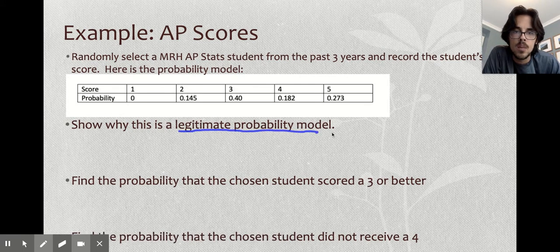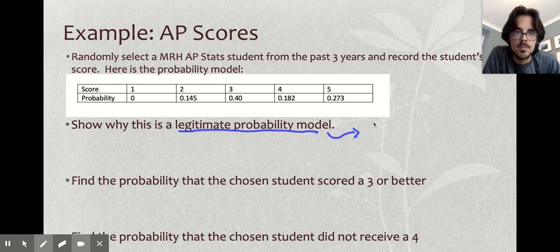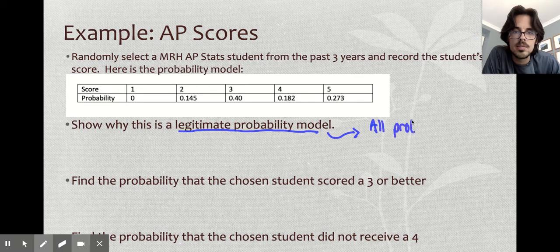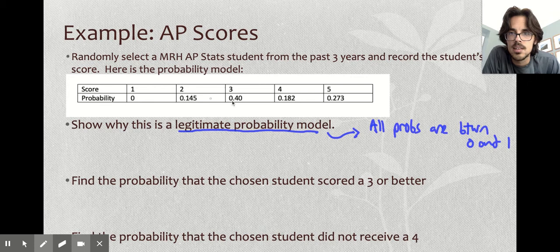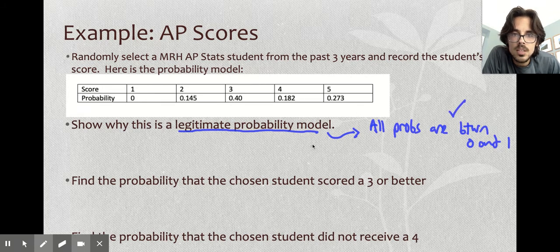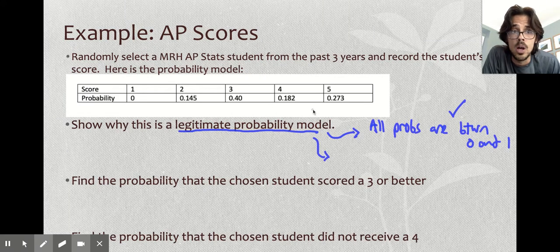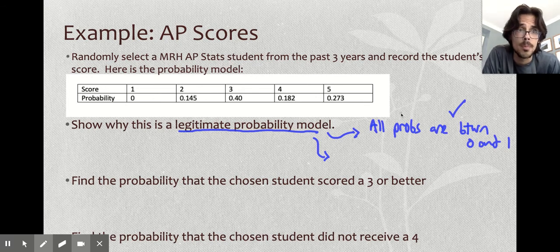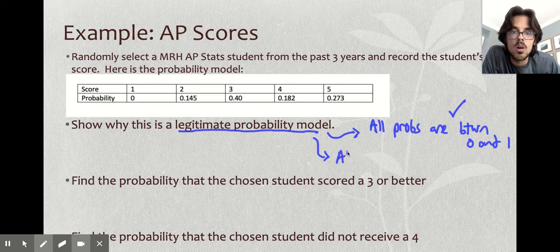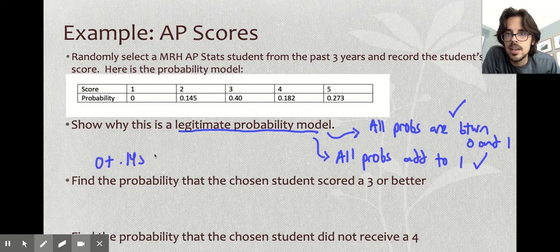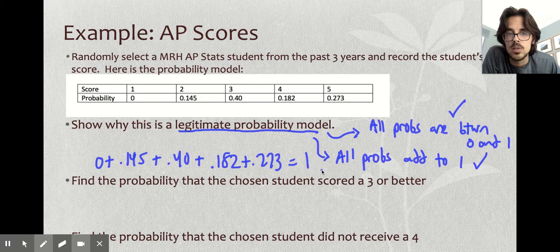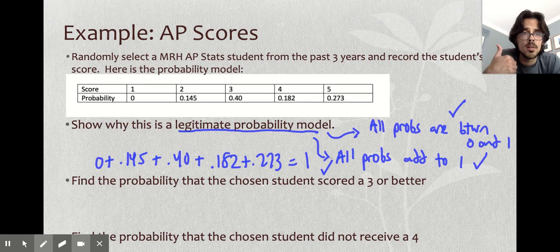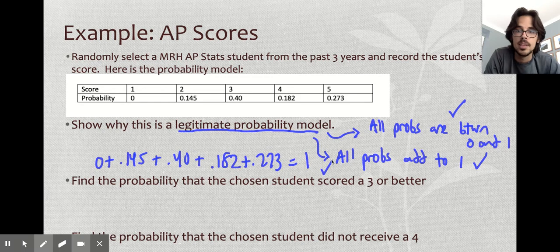It says to show why this is a legitimate probability model. You need to do two things when you show it's a legitimate probability model. You need to show that all probabilities are valid. And by valid, I mean they're between 0 and 1. If you look at these, yes, they're all between 0 and 1. Good. You also need to show that all the probabilities add up to 1. If these don't add up to 1, that means that something is missing and it's not a full probability model because it doesn't have everything in the sample space. So I would just add these up and make sure that they actually do equal 1 to make sure I didn't leave anything out. And they do.